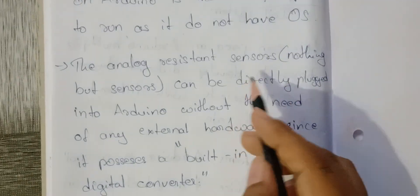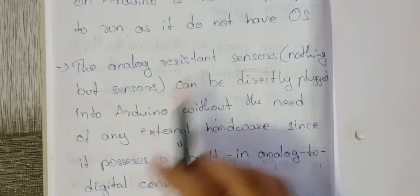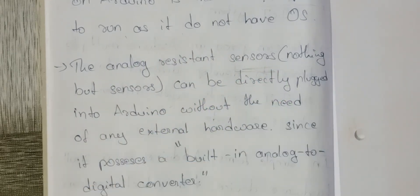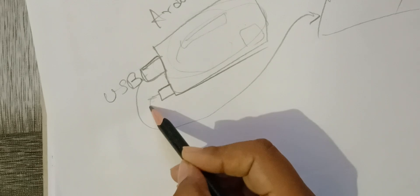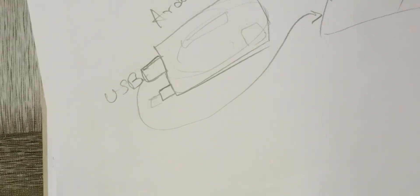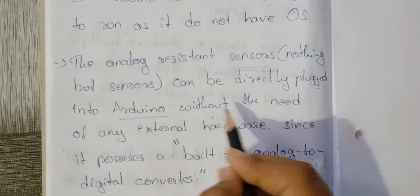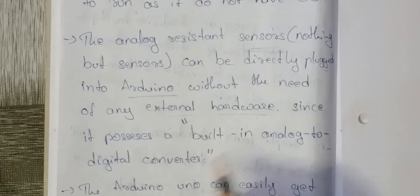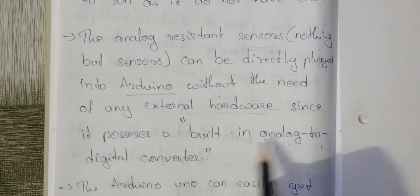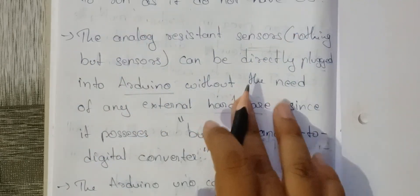Analog resistance sensors can be directly plugged into Arduino without the need of any external hardware. There is a direct port provided, so you don't need a separate extension box. This is possible because Arduino has a built-in analog-to-digital converter, so no external hardware is required to connect sensors directly.